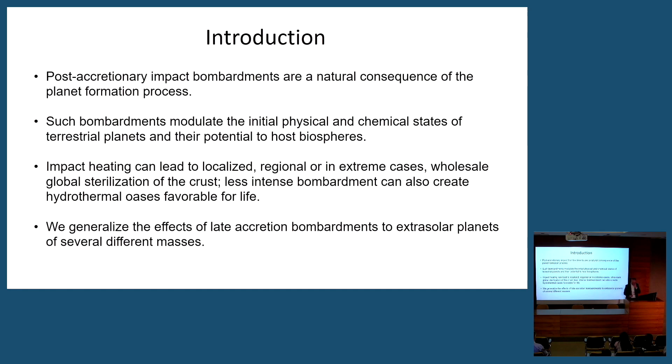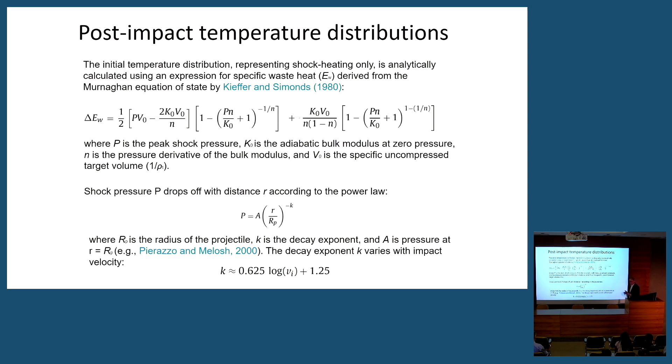The way we do this is we take an initial temperature distribution. You take the crust, as geophysics tells us, has a particular thermal conductivity profile. It acts like a thermal boundary layer. And it has known properties, known equations of state. We use the Merlingate equation of state from Kiefer and Simons. There are others, but this is an analytical treatment. This is not a treatment that uses smooth particle hydrodynamics. None of that.